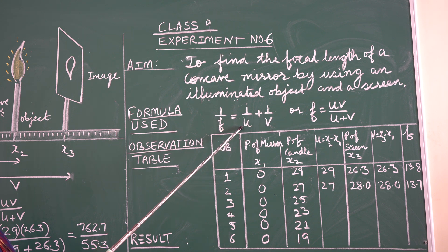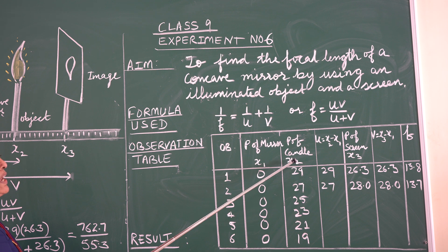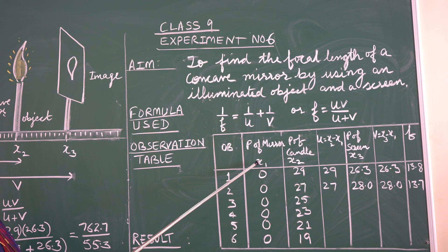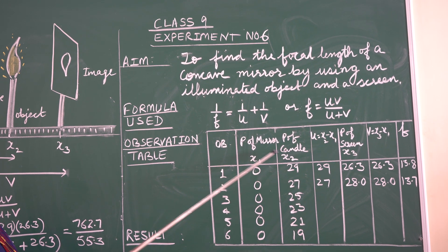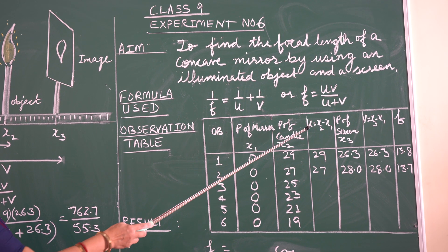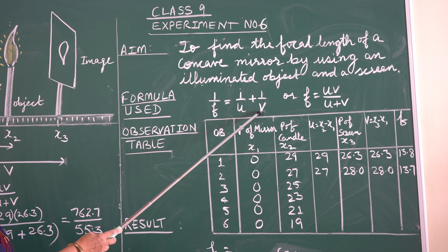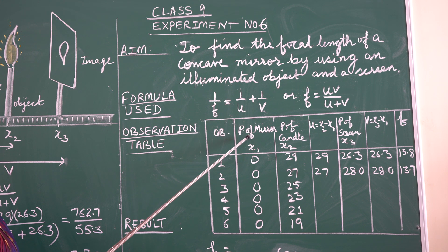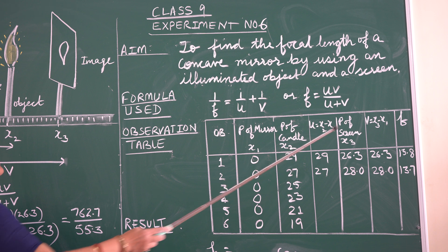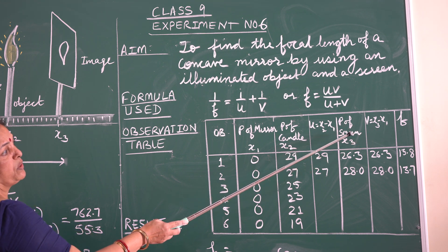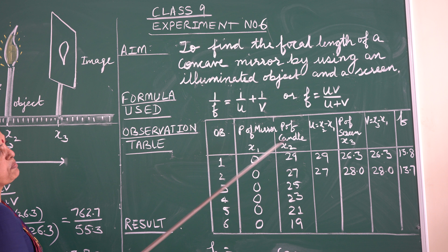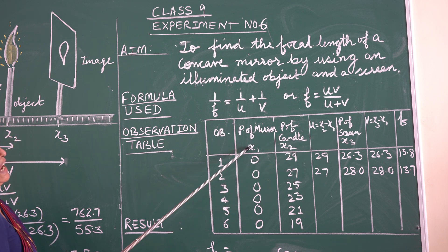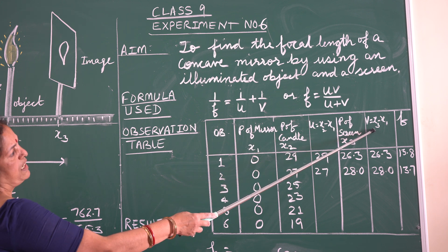Object distance means the distance between the concave mirror and the object, which is the candle. x2 is the candle and x1 is the mirror, so the distance between the two is taken as u, the object distance. v is the image distance — the distance between the concave mirror and the screen, where the image will appear. So the distance between x3 and x1 is taken as the image distance.